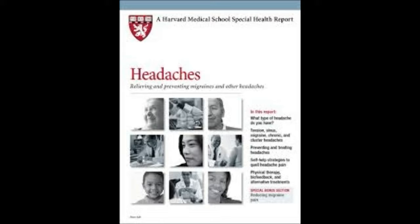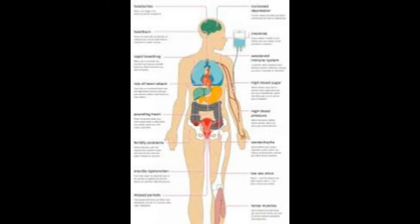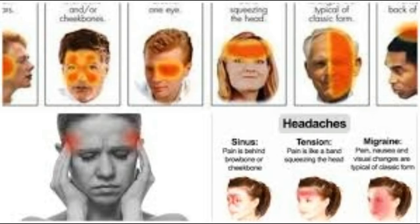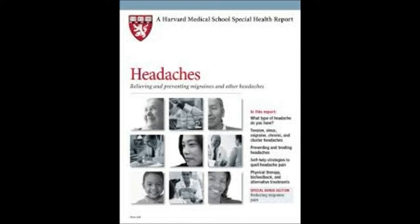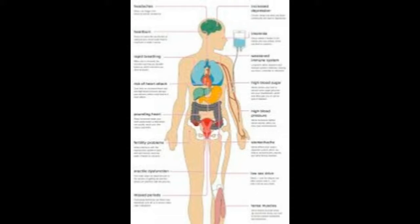Your neck headache can originate from a variety of musculoskeletal and neurovascular structures in your upper neck, including the upper three neck joints, C2-3 disc, spinal cord coverings, and neck muscles. A dysfunction in these areas can trigger pain signals that travel to your brainstem. This information is then transmitted into your brain and interpreted as a headache. The most likely sources are dysfunction of your upper neck joints, neck muscles, or nerves, which trigger pain signals that travel to your trigeminal nucleus in your brainstem.